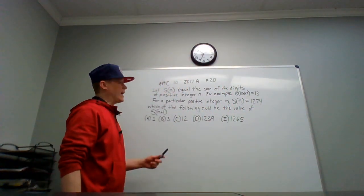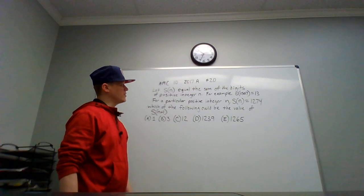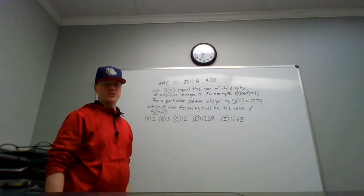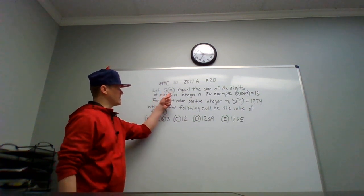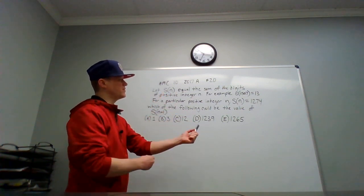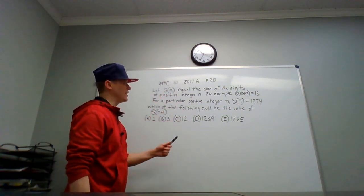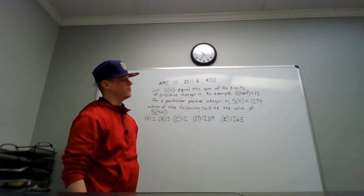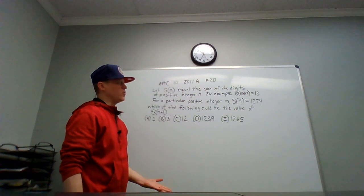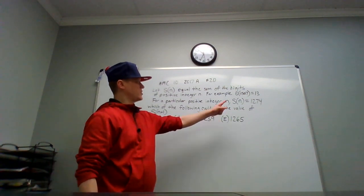Today we're going to be looking at AMC 10 2017 A question number 20. The question says let s(n) equal the sum of the digits of positive integer n. For example, s(1507) equals 13 because 1 plus 5 plus 7 is 13.